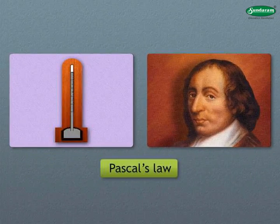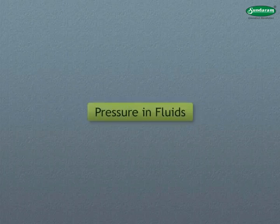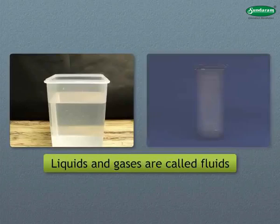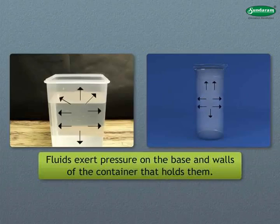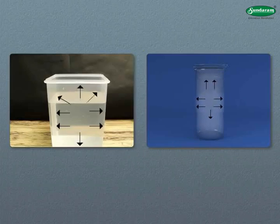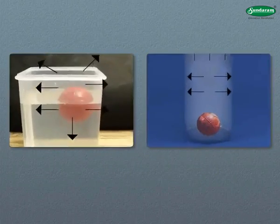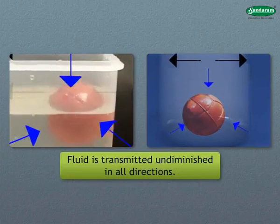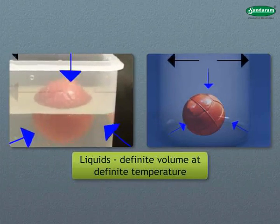Liquids and gases are called fluids — substances which can flow. Fluids exert pressure on the base and walls of the container that holds them, due to the weight of the fluid. Fluids also exert pressure on all bodies immersed in them. Pressure exerted in any confined mass of fluid is transmitted undiminished in all directions.